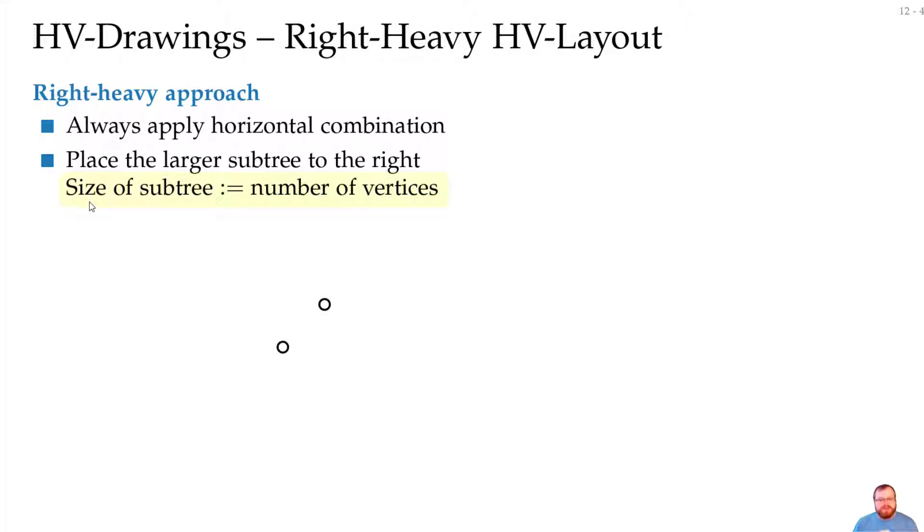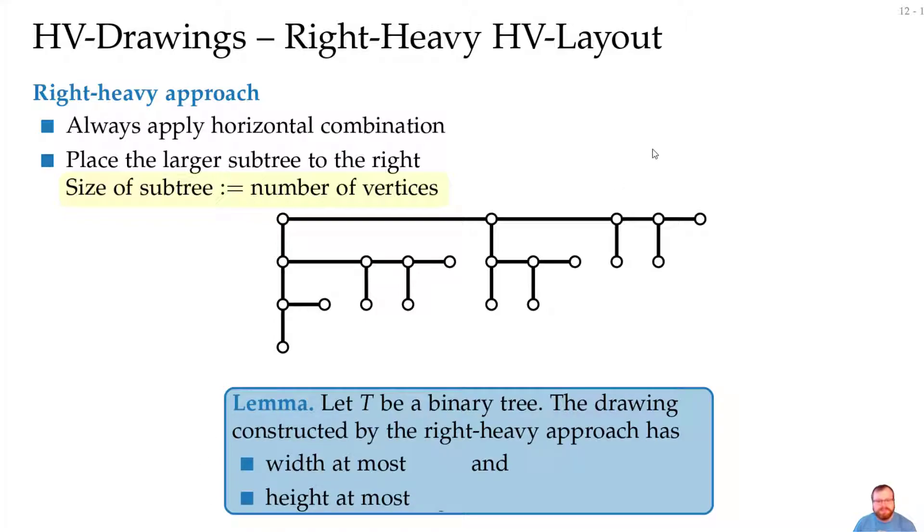So let's have a look. In the base case, we have just two vertices and with a parent we just place them like this. Now we might add another one. This is the larger subtree, so we put it to the right and we combine them here. We might get another one. This is again larger, so we put it to the right and we merge the meta-vertex here. So this is a drawing we might get. Now if we have a binary tree, what are the width and what are the height that we will get from this algorithm? What is your guess?